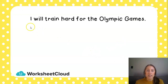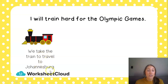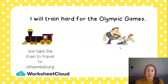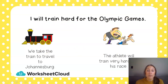Let's look at the sentence: I will train hard for the Olympic Games. Train could mean the train we take to travel — that's a noun you can touch and hear. But there's another meaning: the athlete will train very hard for his race, meaning to practice or work at something. In this sentence, train hard for the Olympic Games means to practice, so it's the verb meaning.